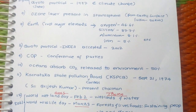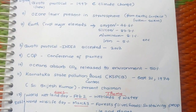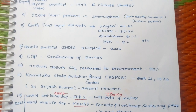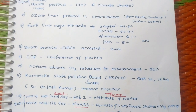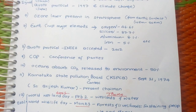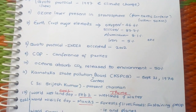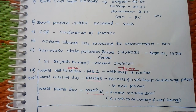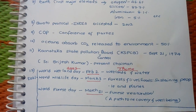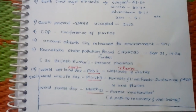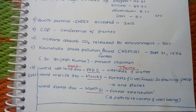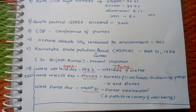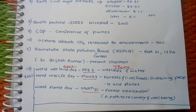Earth's crust major elements are: Oxygen 46.6%, Silicon 27.7%, Aluminium 8.1%, Iron 5.5%, etc. The Kyoto Protocol was accepted in India in 2002. COP means Conference of Parties. Oceans absorb CO2 and release 15% of that carbon dioxide back to the environment.